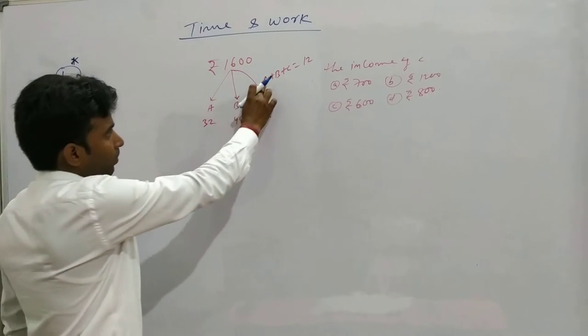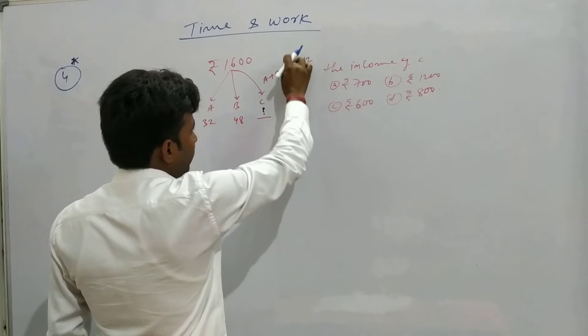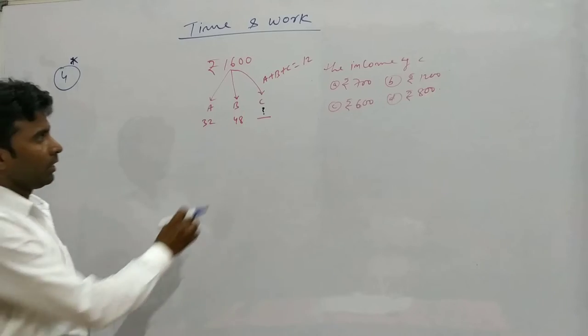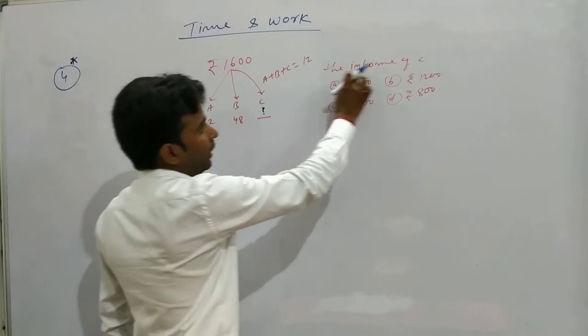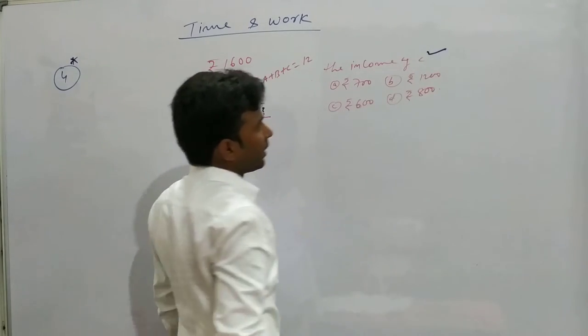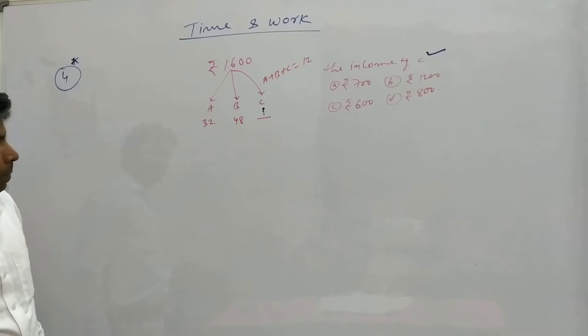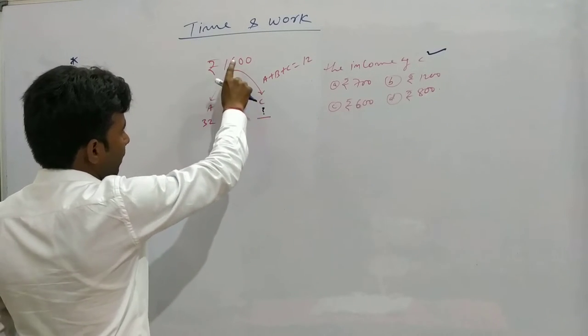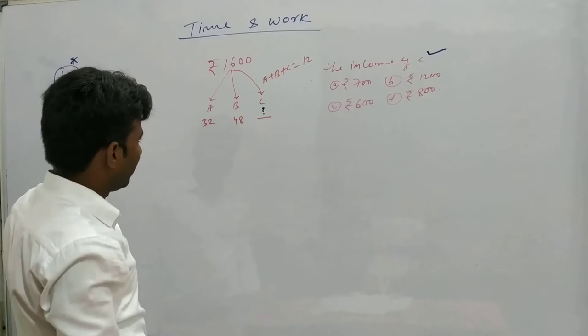A plus B plus C together complete the work in 12 days. In this case, what will be C's income? What will be C's share? If all three work together, first we need to find out how many days C will take to do this work.